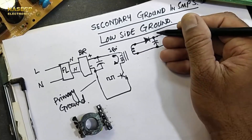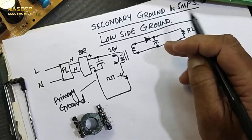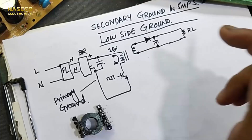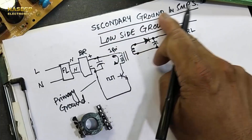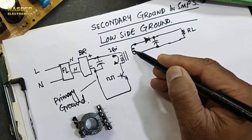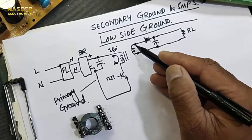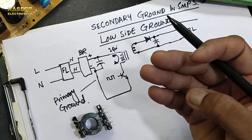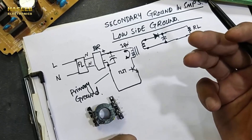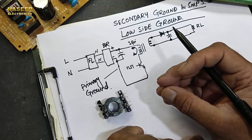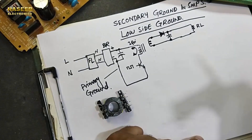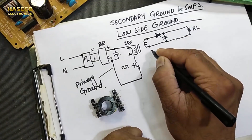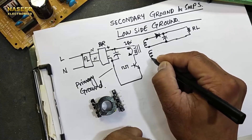Without the diode and capacitor, bi-directional current would flow in the load. By adding them we make it unidirectional DC current. This gives us the secondary ground. The winding provides both a high side and a low side, similar to a power transformer where we have a hot wire (phase/line) and a neutral wire — the neutral being the low side.